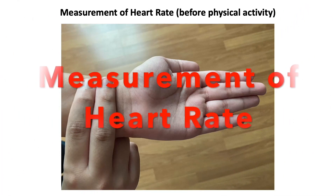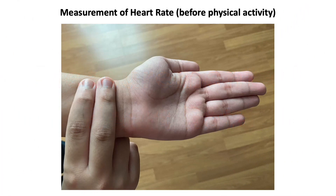This is the next section of the experiment — you need to measure your heart rate. There should be 3 participants: Student A, Student B, and Student C. In this experiment, you need to use a stopwatch. You need to find the artery at your wrist.